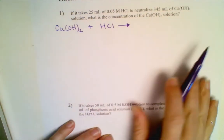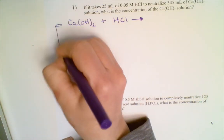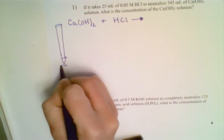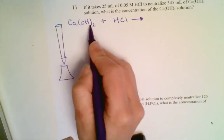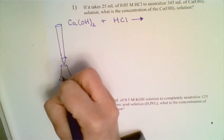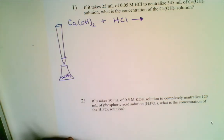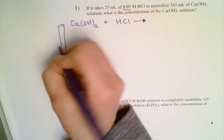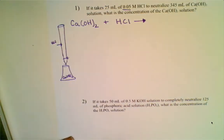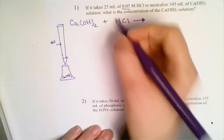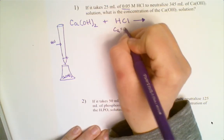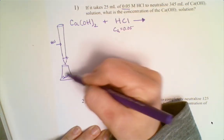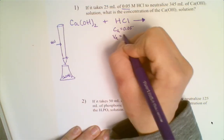In this setup, the burette is in its stand and you are trying to determine the concentration of calcium hydroxide. That is your base, so it goes inside the flask — the one whose concentration you are trying to find. The HCl, whose concentration you know, goes inside the burette. The initial concentration of your acid is 0.05 mol/L, and it took 25 milliliters of that acid to neutralize the base.